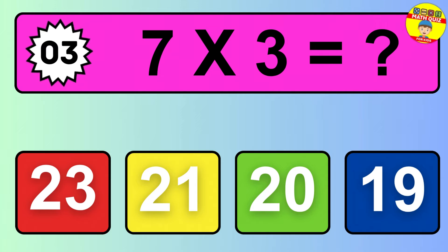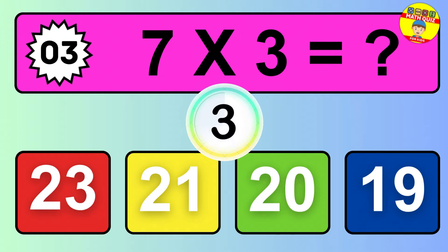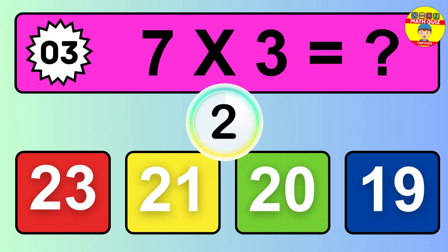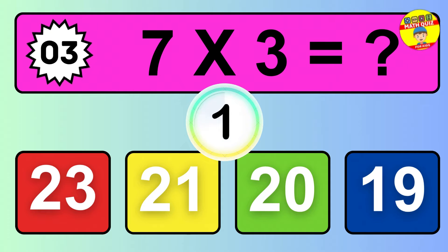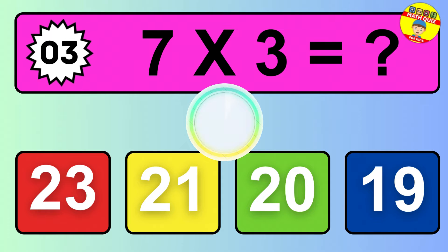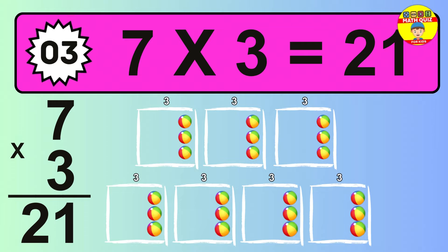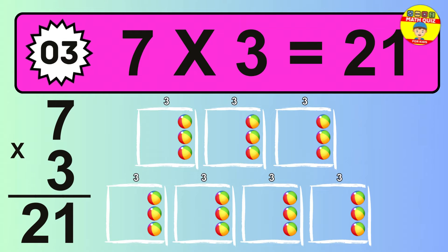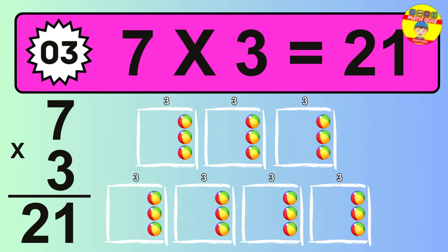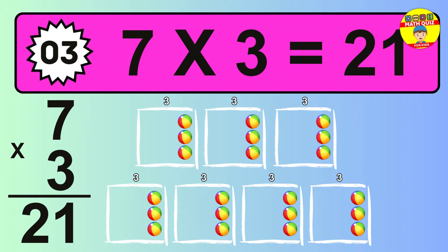Question 3. 7 times 3 equals what? To calculate, we have 7 groups with 3 balls each one. So, how many balls do we have? 21 balls.